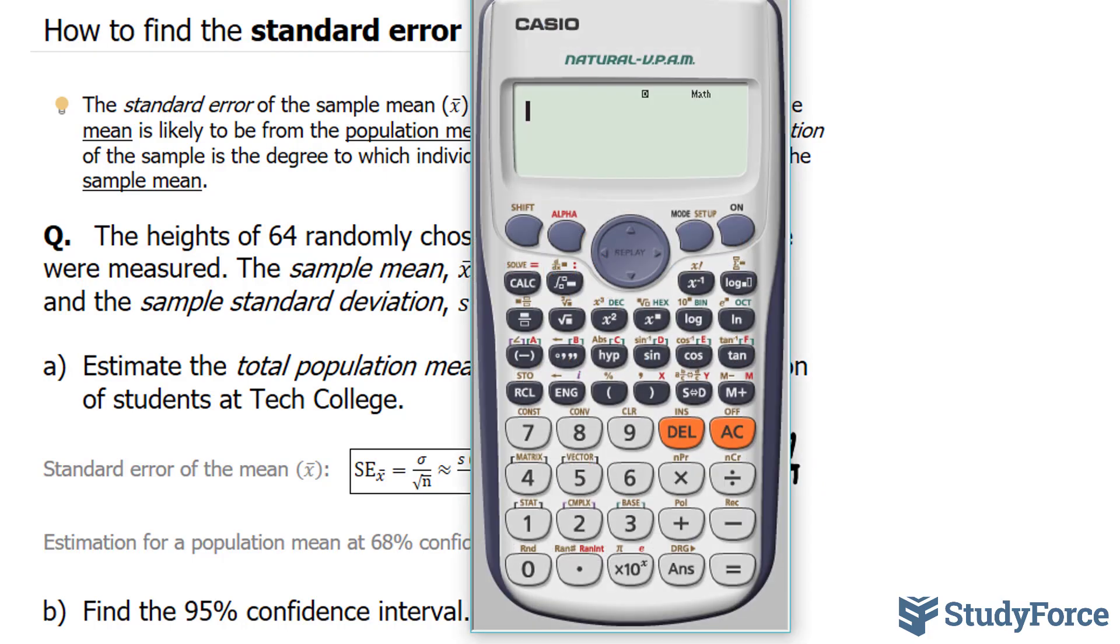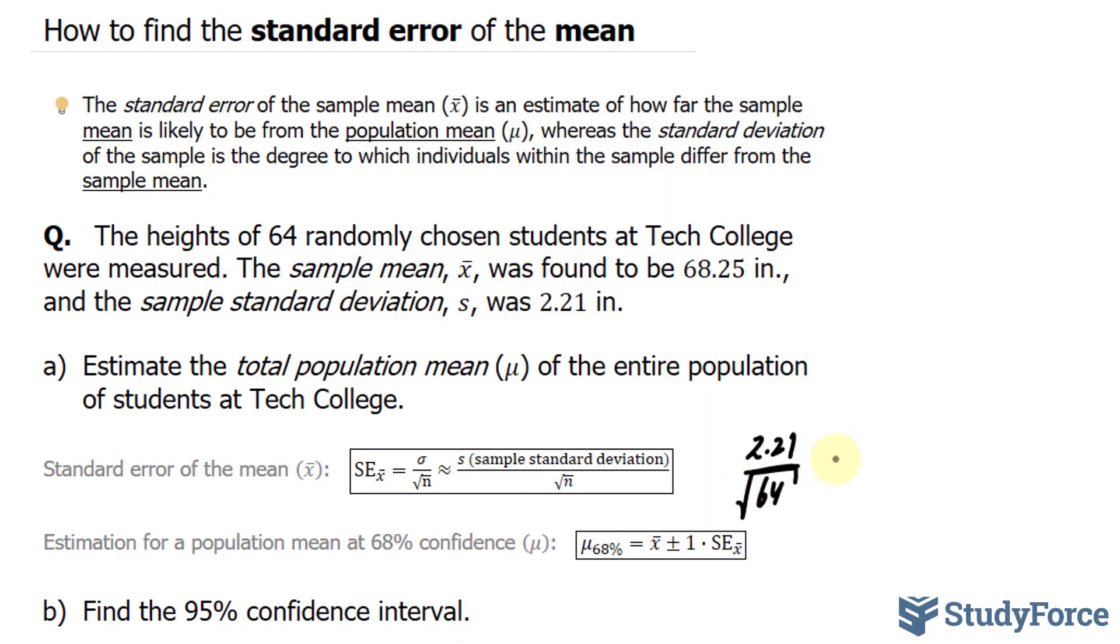Using the calculator, 2.21 divided by the square root of 64 gives us 0.27625. And I'll simply round this to two decimal places because we have three significant digits here and two here. So this becomes 0.28.